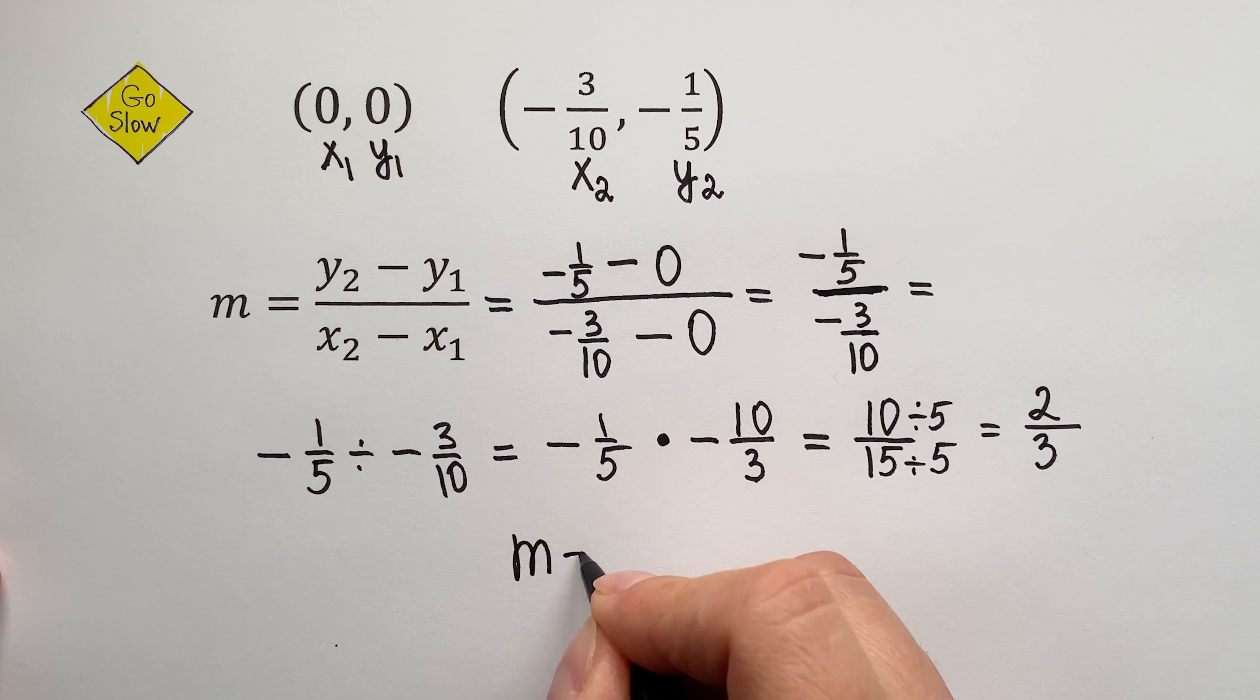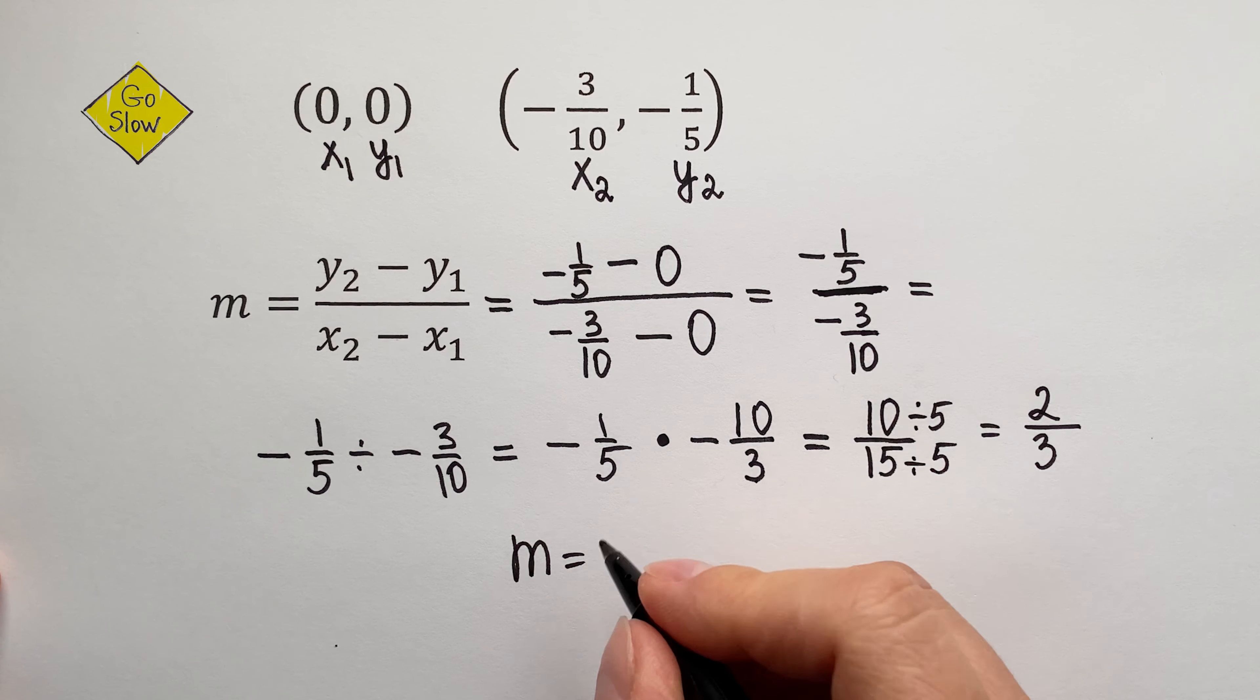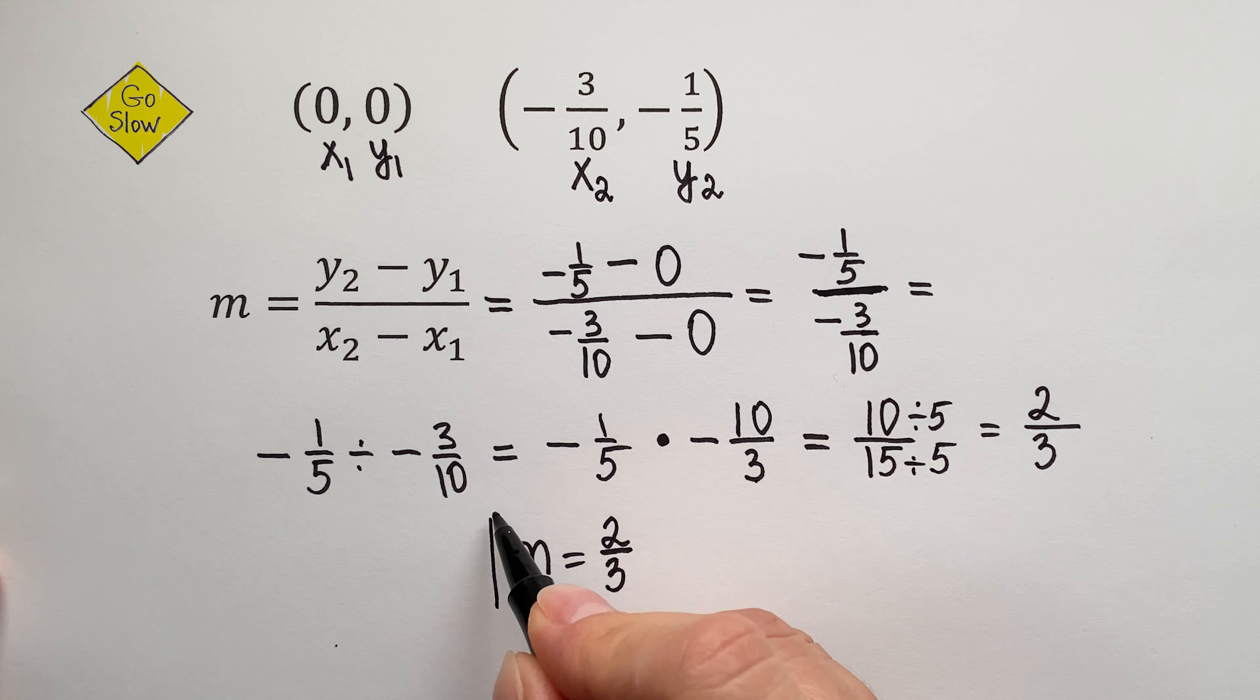15 divided by 5 is 3. So, we've found the slope between our two nice-looking points. The slope is positive 2 thirds. Very good!